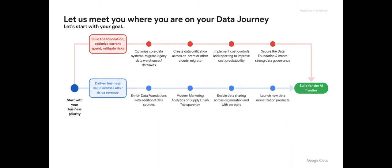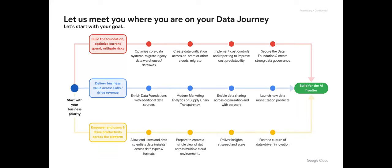The second avenue is delivering business value across line of business — we have entire data models, ML models, and use cases built in supply chain, marketing analytics, contact center AI, finance operations, accounting, and HR processes, and enabling data sharing and launching new data monetization products. Empowering end users: if you want your data scientist team to be 33% more productive and shift them to higher-value work, we have a pathway to help there. It's not a linear process — we will meet you where you are on your data journey.